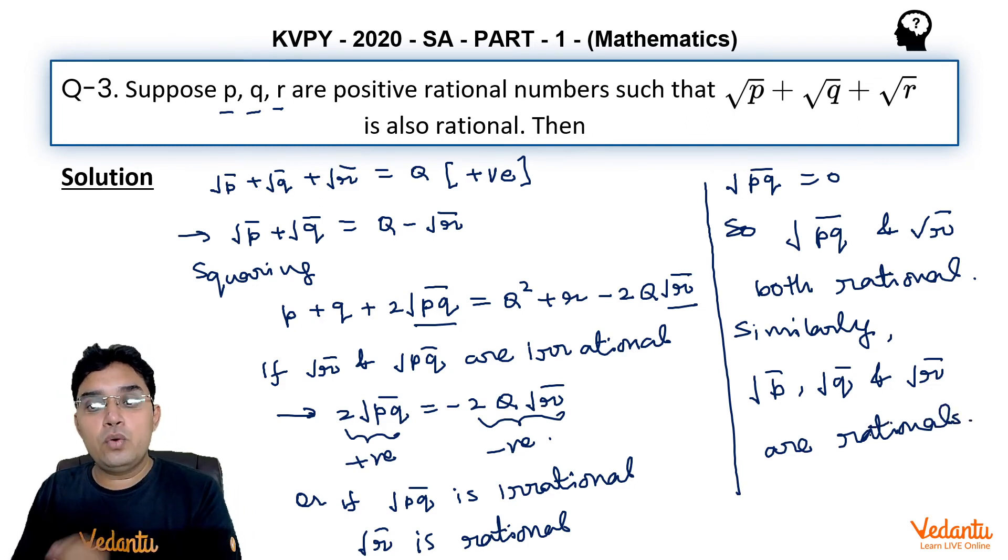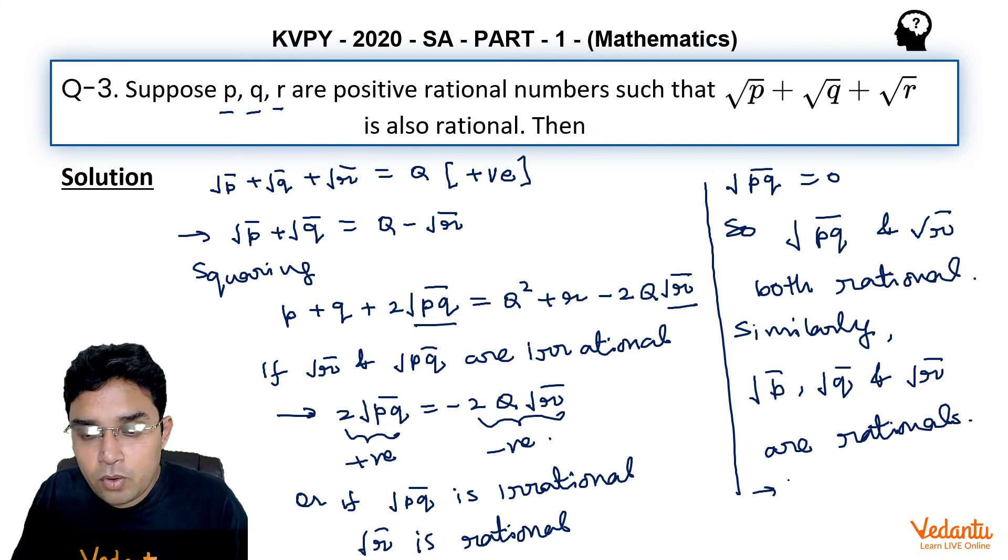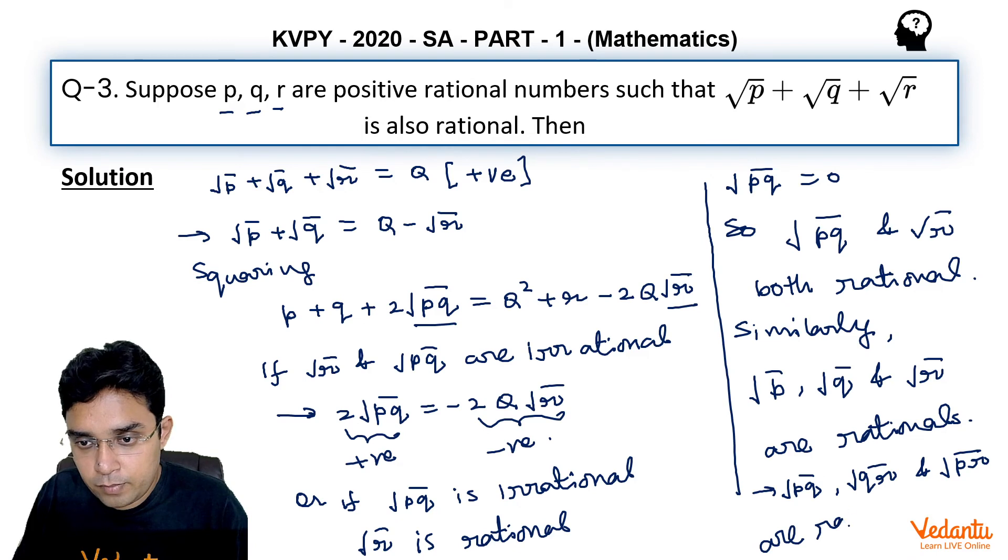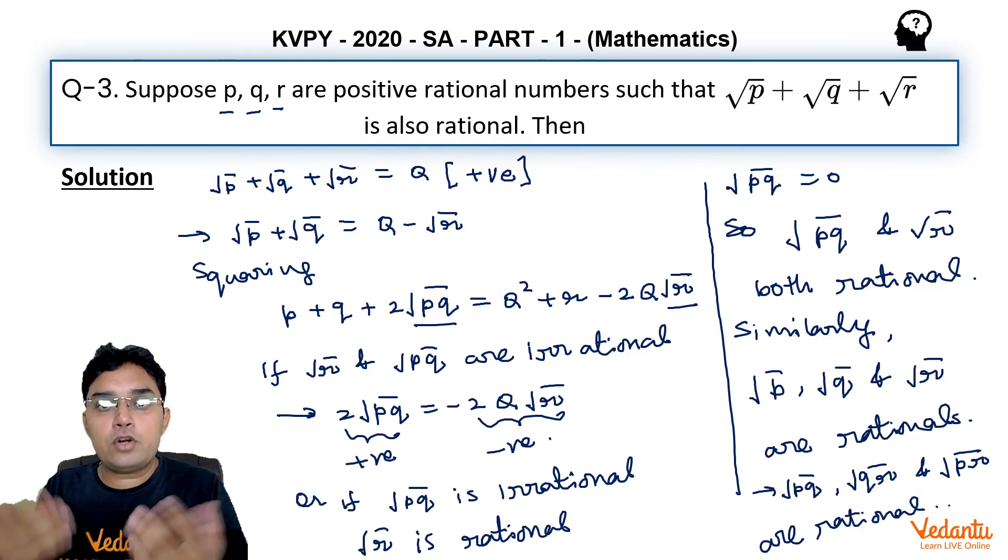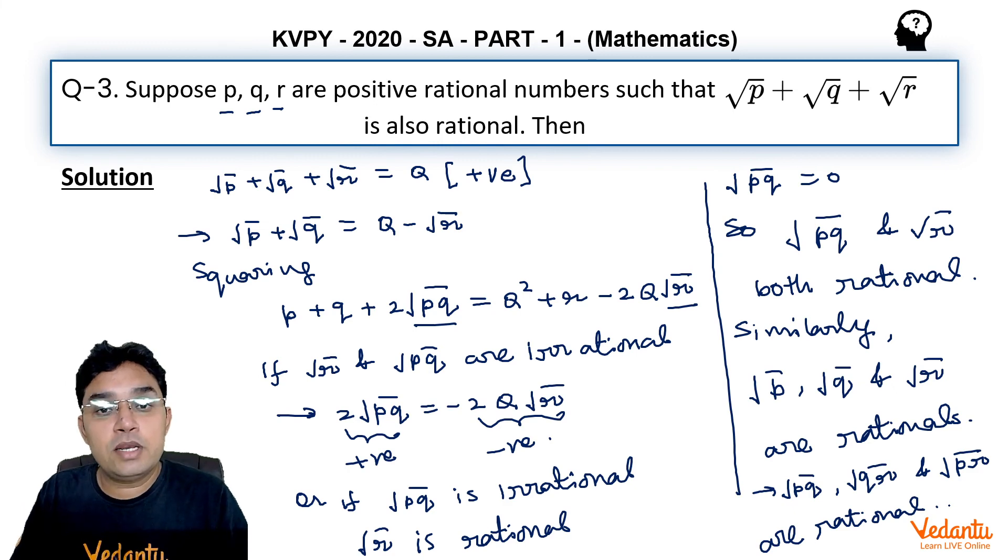In fact, if √p, √q, √r are rational, then all these numbers √pq, √qr, and √pr will also become rational, because they are just the product of two rational numbers, which has to be a rational number.